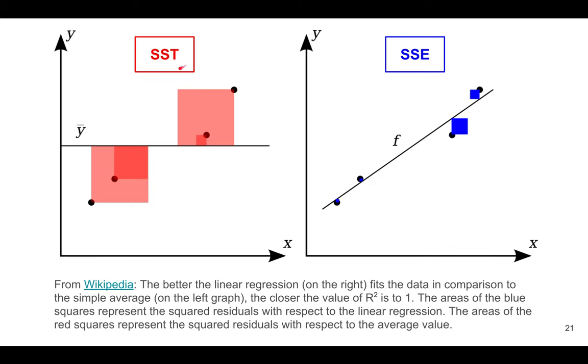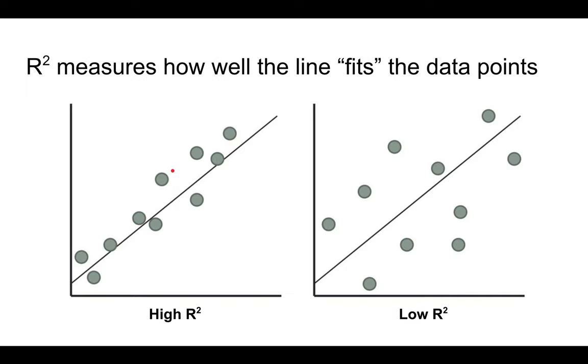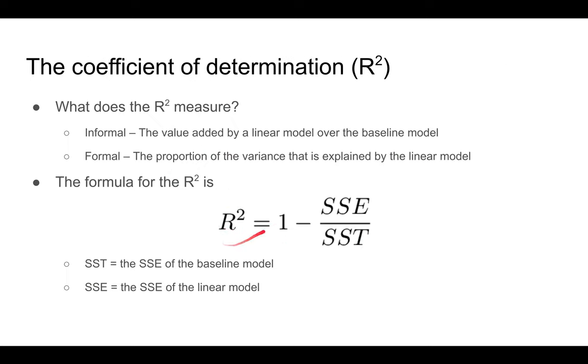Here's a graph that I borrowed from Wikipedia to illustrate the total sum of squares and the sum of squared errors. This is the baseline model. You take the error, then you square it, so that's why there's a square, and you sum up the areas of these four squares. This is the sum of squared errors for this line, where you take the difference between the observed values and the predicted values, you take the squares, and you calculate the area. In this example, this SSE is pretty small, it's close to zero. And this SSE is quite large. So if you plug it into the formula, you get an r squared very close to one.